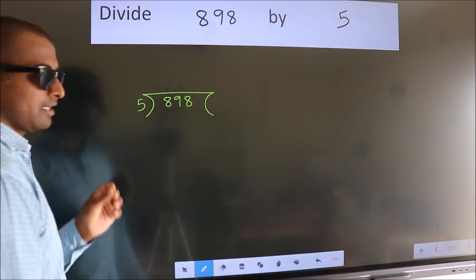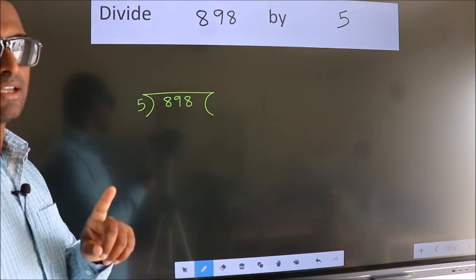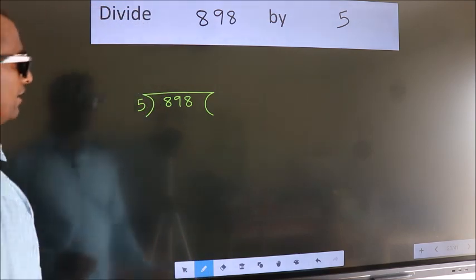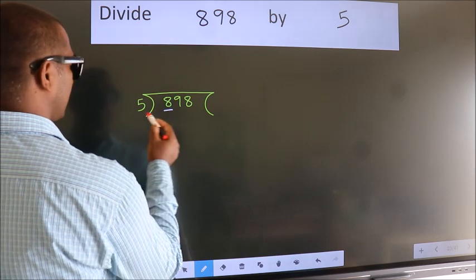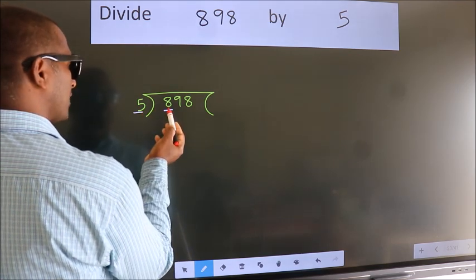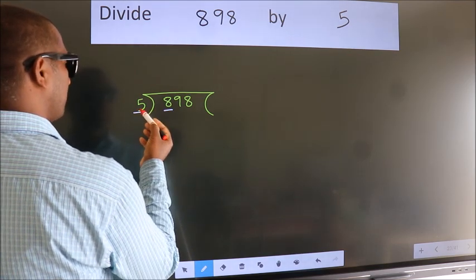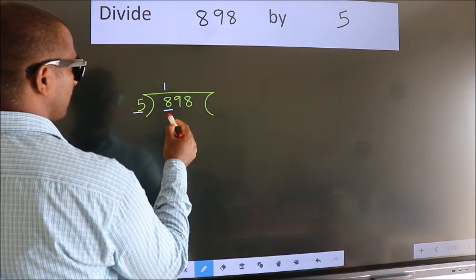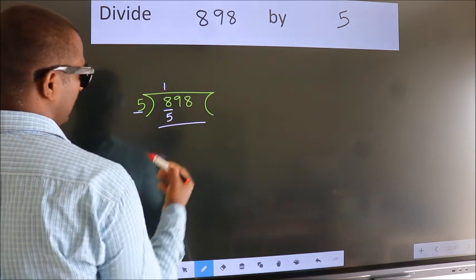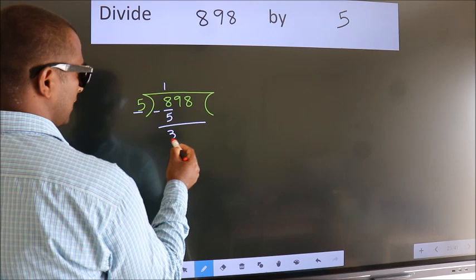This is your step 1. Next, here we have 8, here 5. A number close to 8 in the 5 table is 5 once 5. Now we should subtract. We get 3.